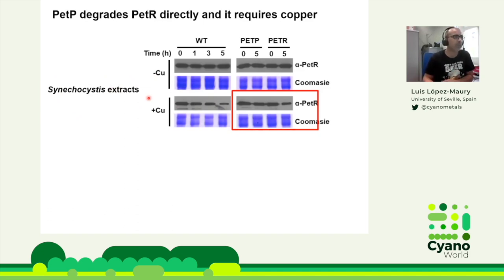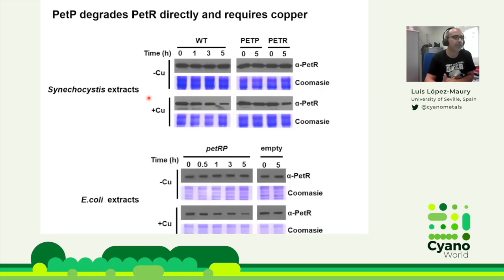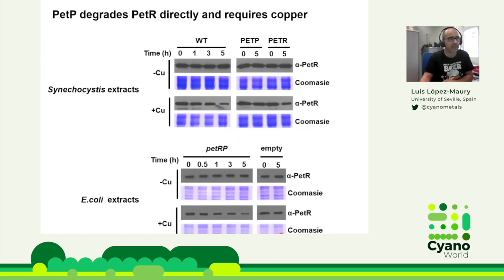Because the whole cell extract results couldn't rule out an additional factor involved in degradation, we repeated the assay using E. coli extracts transformed with a plasmid carrying PETR and PETP, or a control with an empty plasmid. We observed exactly the same result: the transcriptional factor was degraded in the presence of copper only when the PETP gene was present in the system.